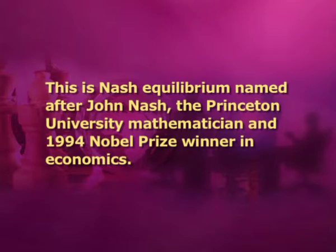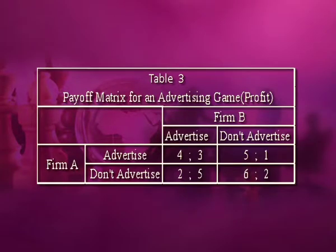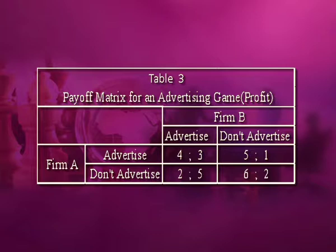This is Nash equilibrium, named after John Nash, the Princeton University mathematician and 1994 Nobel Prize winner in economics. The Nash equilibrium is the situation in which each player chooses his optimal strategy given the strategy chosen by the other firm. In this example, the strategy to advertise for both firms is Nash equilibrium, because given that firm B chooses its dominant strategy of advertising, the optimal strategy for firm A is also to advertise. It is important to note that when both firms had a dominant strategy, each firm was able to choose its own optimal strategy regardless of the strategy adopted by its rival. In this case, only firm B has a dominant strategy, and so firm A is not in the position to choose its optimal strategy independently.